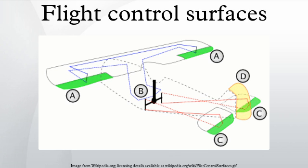Centering the stick returns the elevators to neutral and stops the change of pitch. Many aircraft use a fully movable horizontal stabilizer called stabilator or all-moving tail.